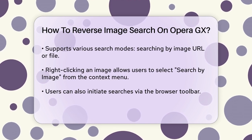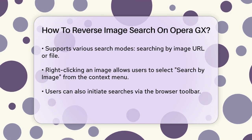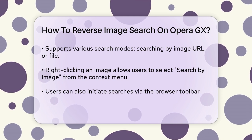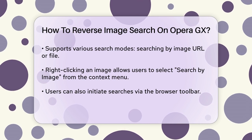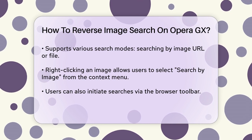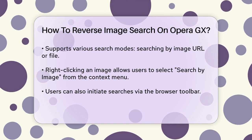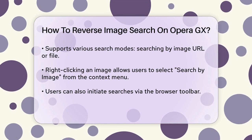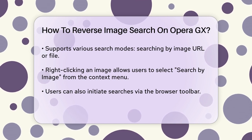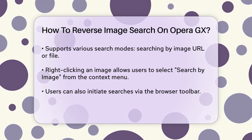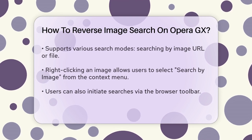You can also capture a part of the page, or browse for an image on your device. To use the extension, simply right-click on an image and select Search by Image from the context menu. You can also use the browser toolbar to initiate the search. The extension supports over 30 different search engines, so you can choose the one that works best for you.